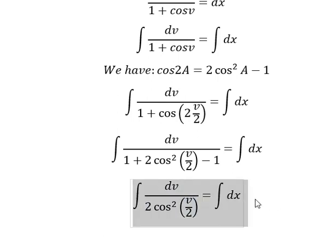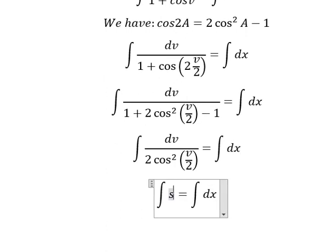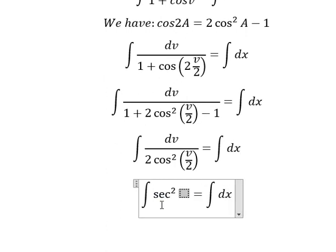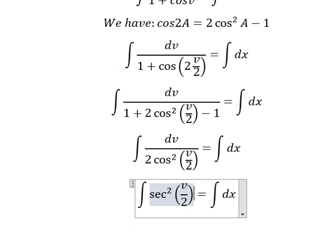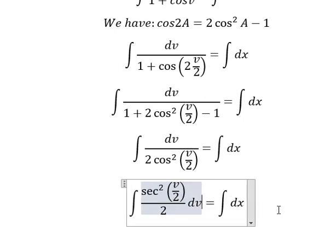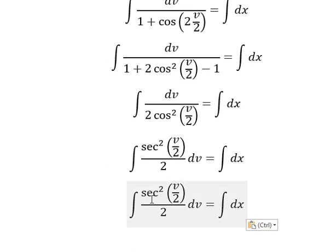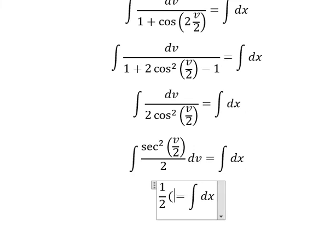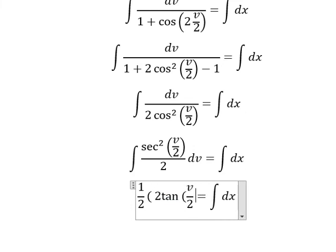And this one we can put into secant of V over 2 squared over number 2, and we have the dV. The integration of secant of V over 2 squared, you got about number 2 tan of V over 2.